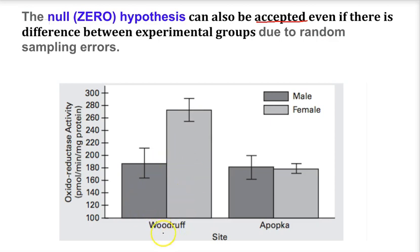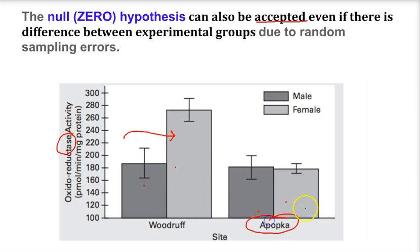Here's a study of alligators and how much of an enzyme activity they have — notice the ACE at the end. These are my males and these are my females. You can see the males and females at Lake Woodruff, which has alligators with no environmental problems — a pristine, clear lake — and Lake Apopka, which has contaminated or environmental problems. We can look and see: is there a significance between the alligators in the nice, pristine lake versus the lake with all kinds of pollution?